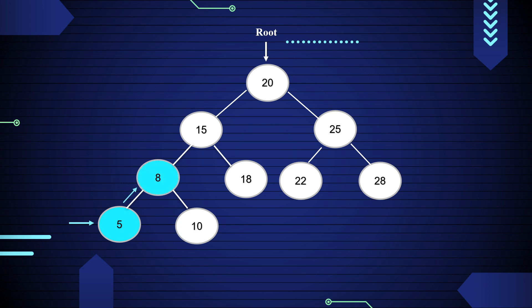Print 10 and move to the root node of 8, that is 15. The left subtree of 15 is visited, so now print 15 and move to the right subtree of 15. Print 18, then move to the root node of 15. Now print root node 20 and move to its right subtree. Recursively traverse the right subtree of 20, that is 25. 25 has a subtree that is 22.